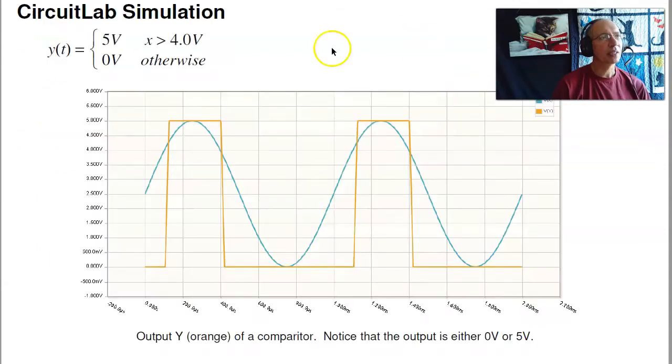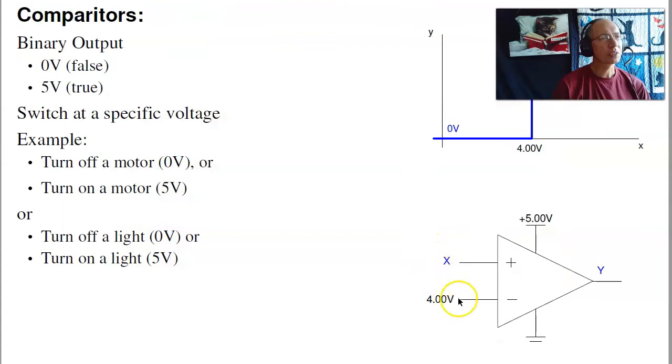And the threshold where it switches is set by your V minus. Now in this case, when the input is bigger than 4 volts, the output is high. Less than 4 volts is low. You could switch that. To switch that, just switch the plus minus signs.